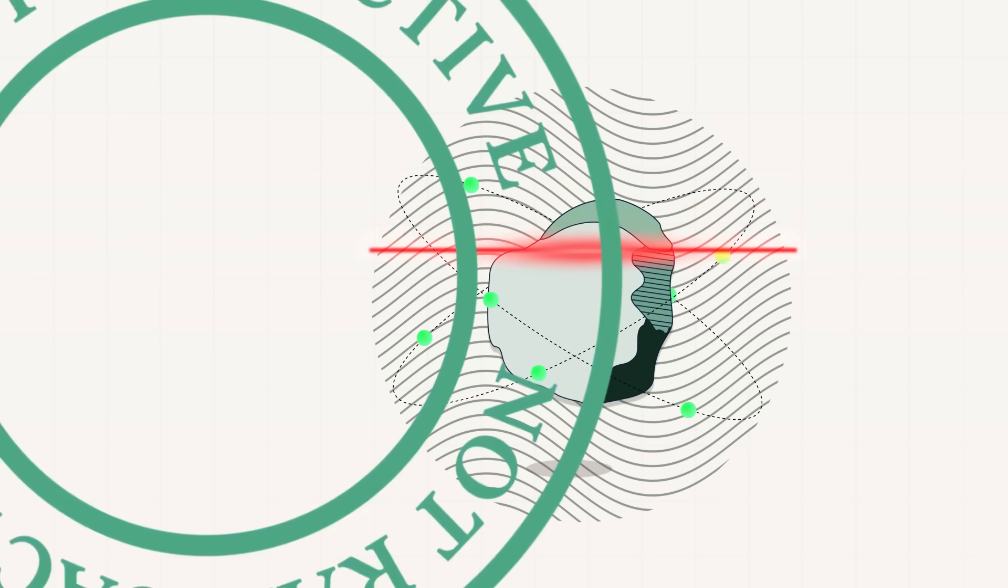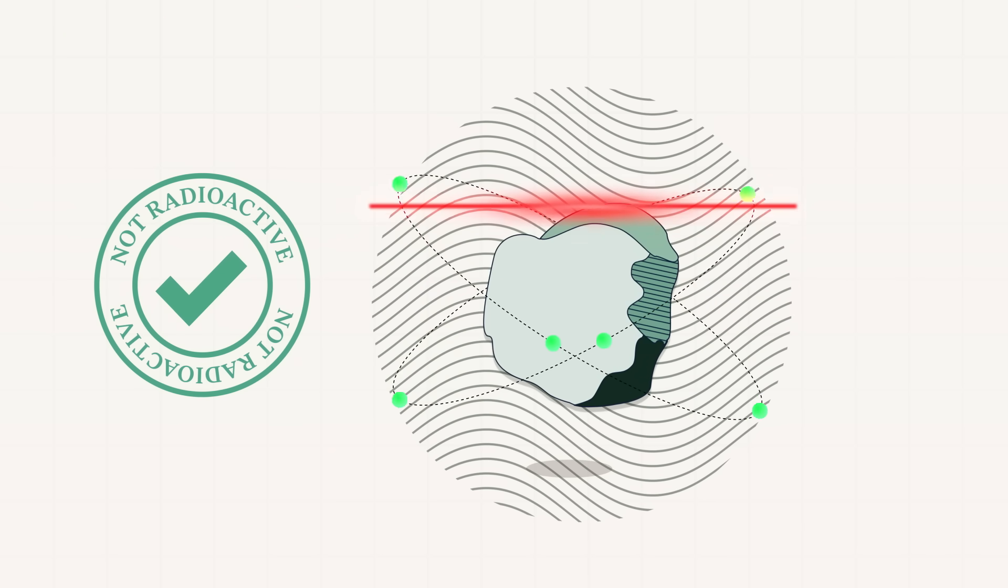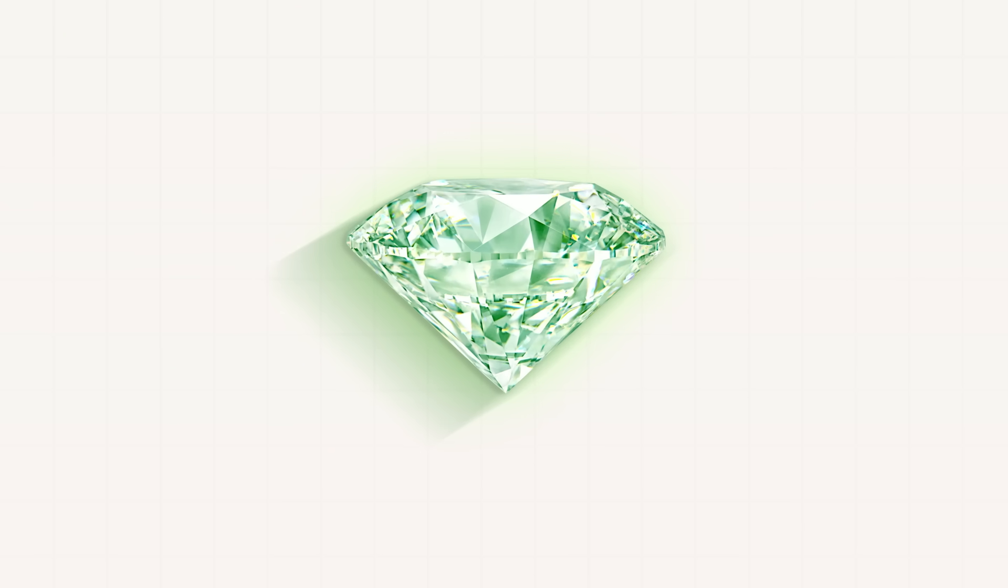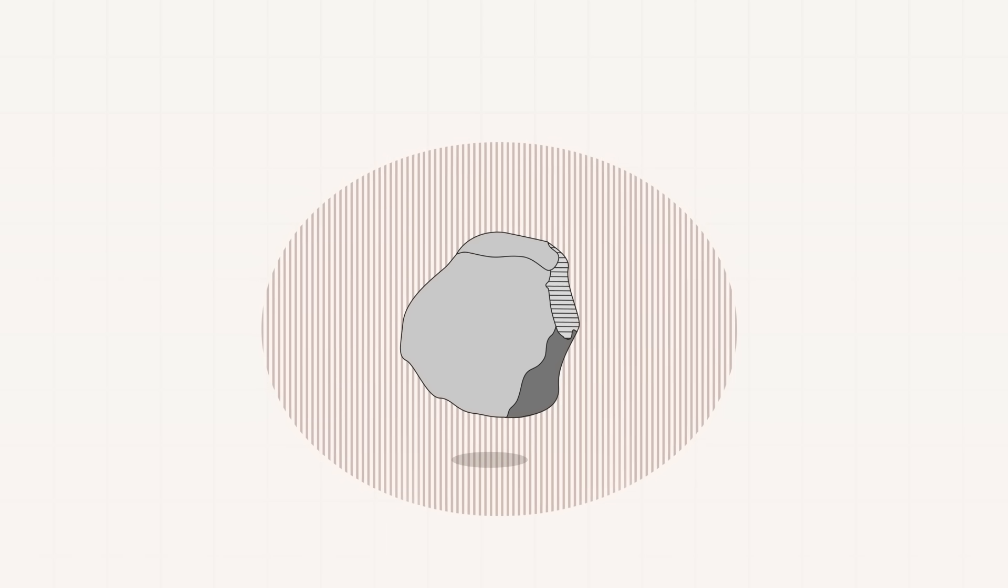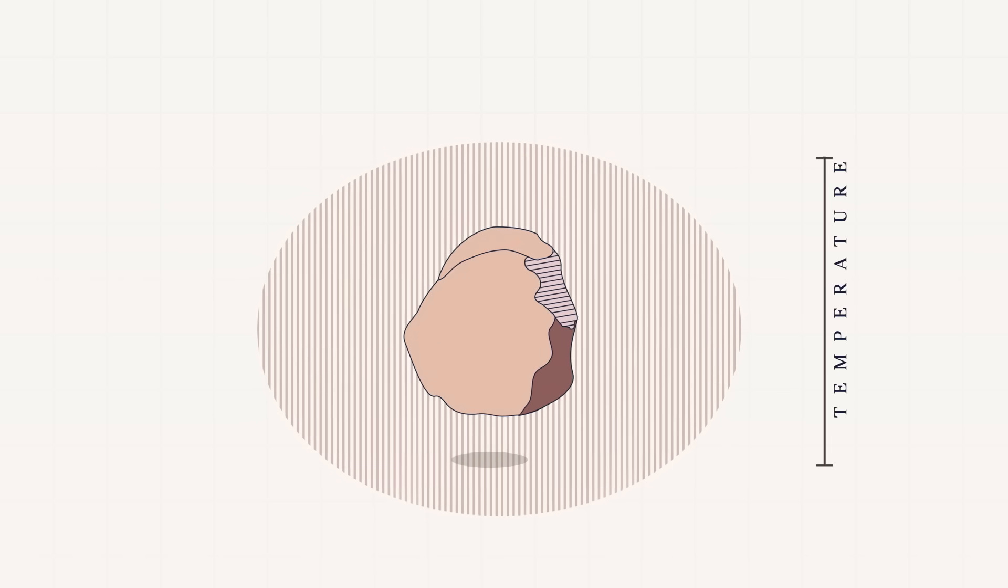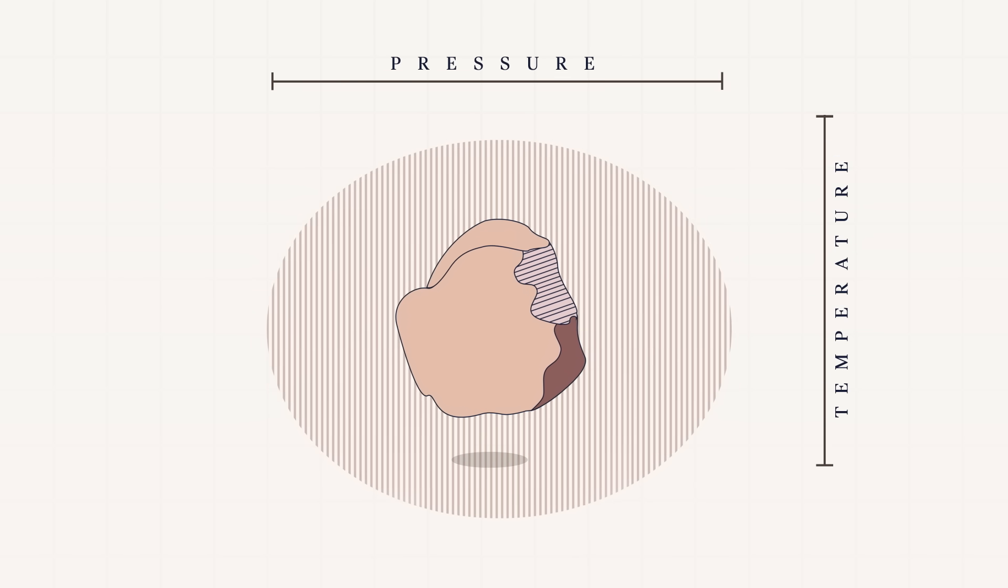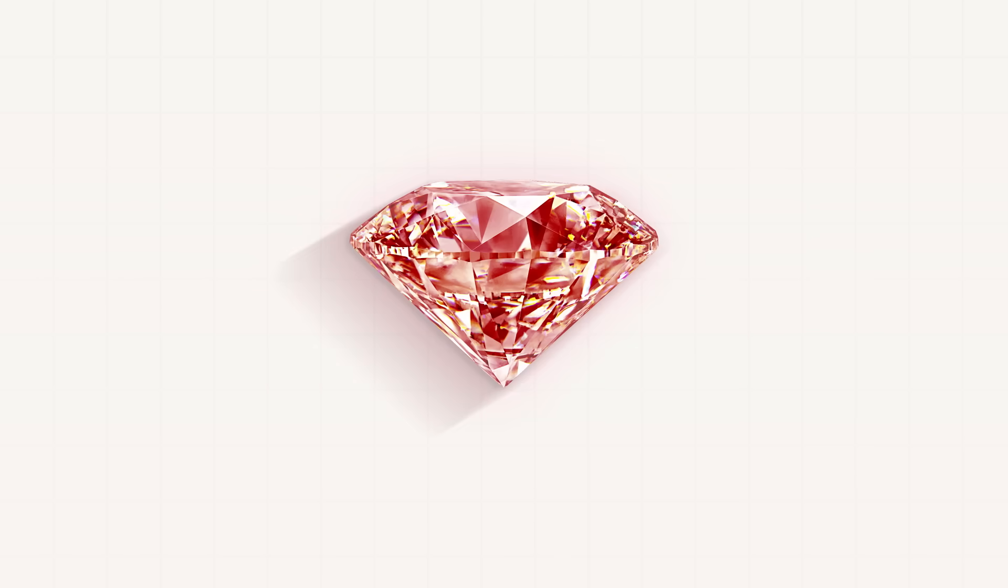However, the diamonds themselves are not radioactive in nature. Green diamonds are a perfect example of this phenomena. Distortions can also occur due to tremendously high temperature and pressure, like in the case of red, pink and brown natural diamonds.